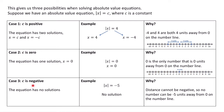0 is the only number that's 0 units away from 0 on the number line. And finally, if c is negative, the equation will have no solutions. For example, |x| = negative 5 has no solution because distance cannot be negative — there's no number that's negative 5 units away from 0.